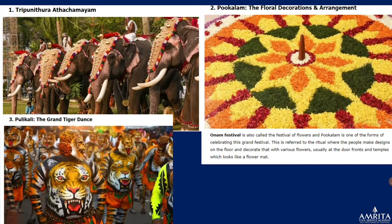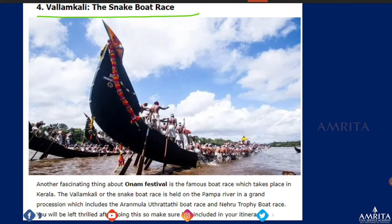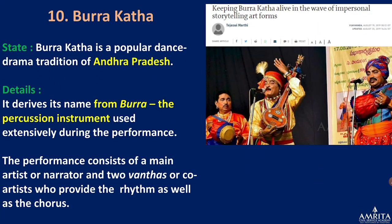Many events are associated with Onam. One we have already seen is Pulikali. Others include Thiruputhyara — an elephant parade at Thrissur — Pookalam, which is a floral decoration and arrangement, and the famous Nehru Trophy Boat Race, also called Vallam Kali or the snake boat race, which happens in Kerala.